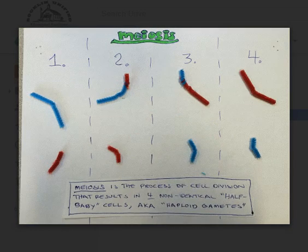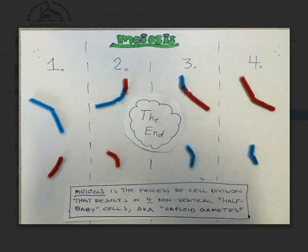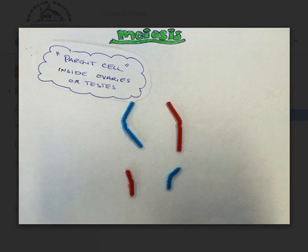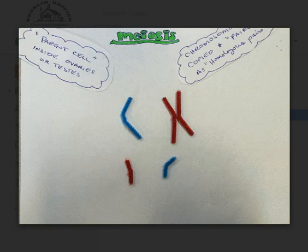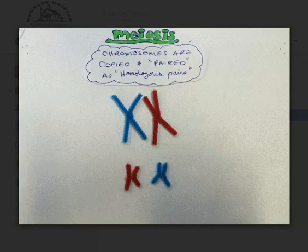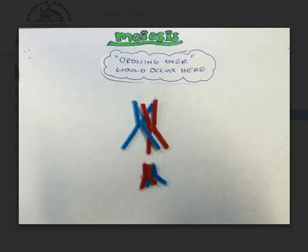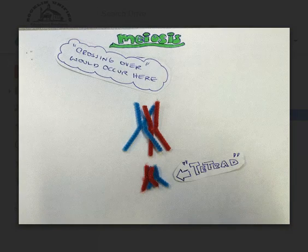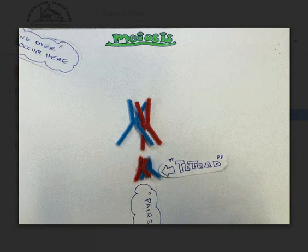This occurs in the ovaries or testes producing sperm or pollen and eggs. And once again that's crossing over, you can see the exchange of those two arms of the chromosomes. They would actually cross over a lot more than that and mix the genetic material more than that, but this is just to give you an idea.